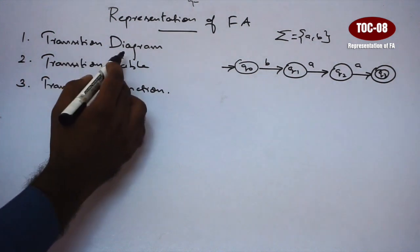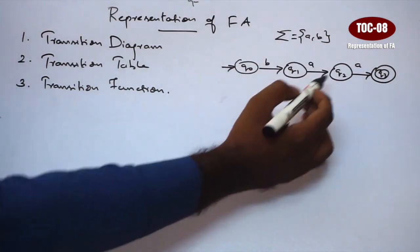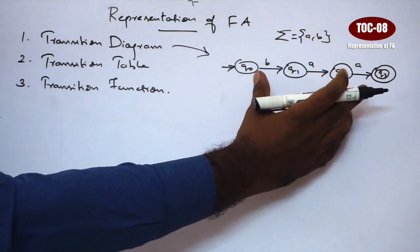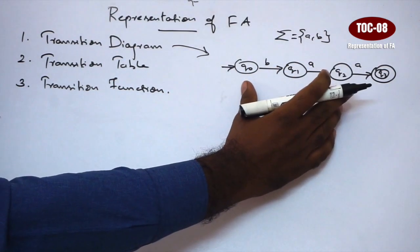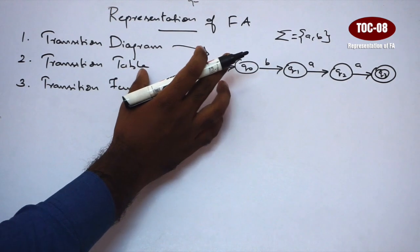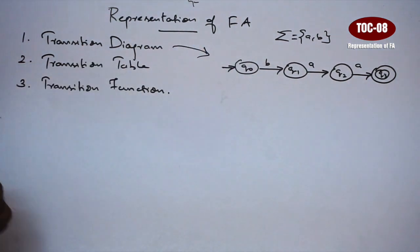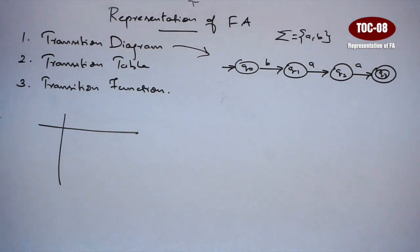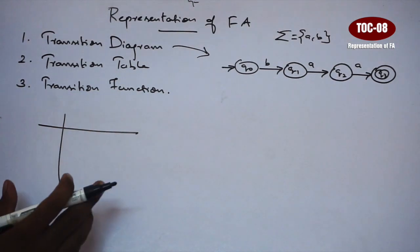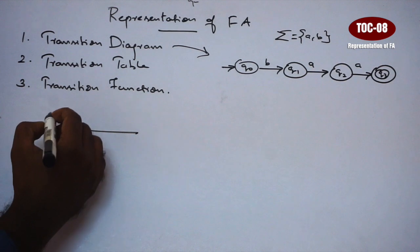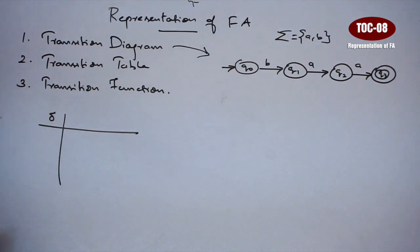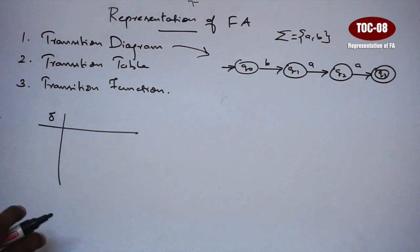The transition diagram is simple — in this diagram format, the transition diagram is represented. Next is the transition table. The transition table is represented in the same way as the transition diagram. The transition function is the same.